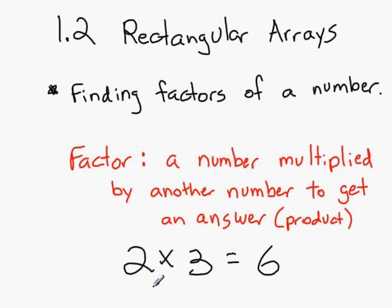And in this case, 2 and 3 are factors. 6 is the product, but 2 and 3 are the factors. They're the numbers multiplied by another number.